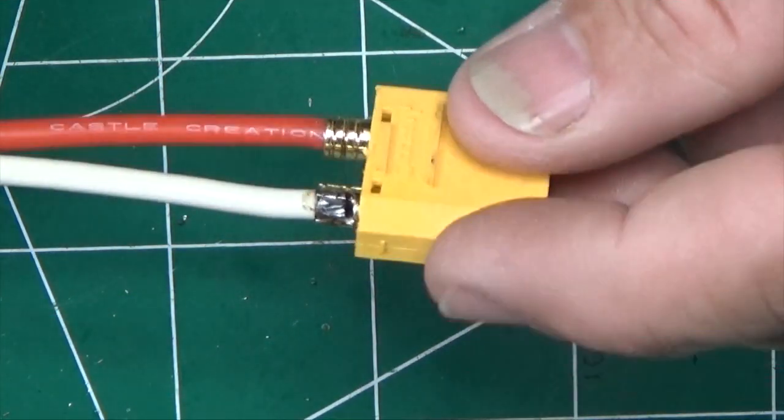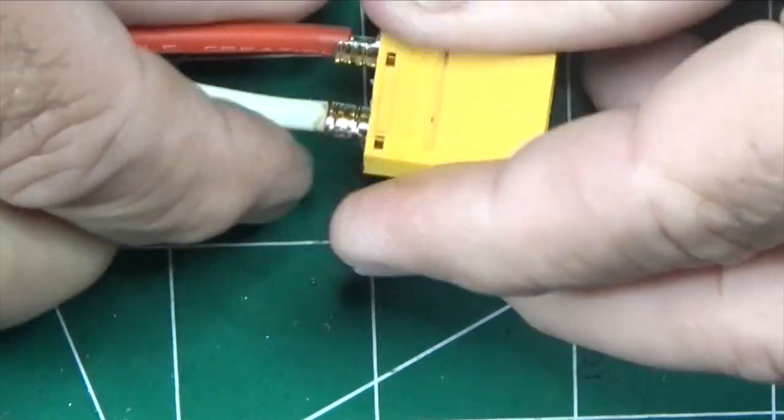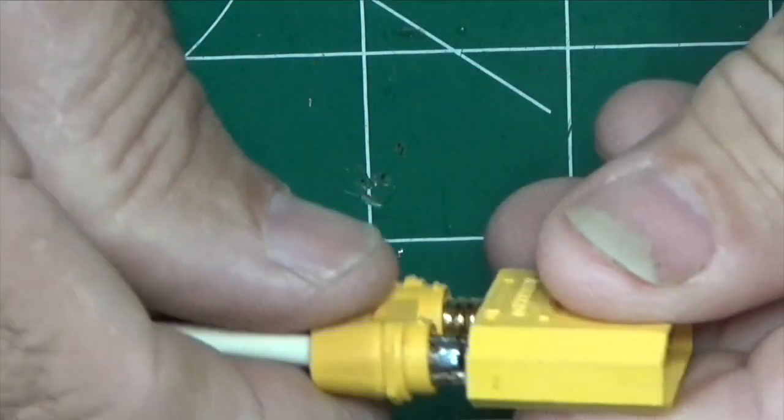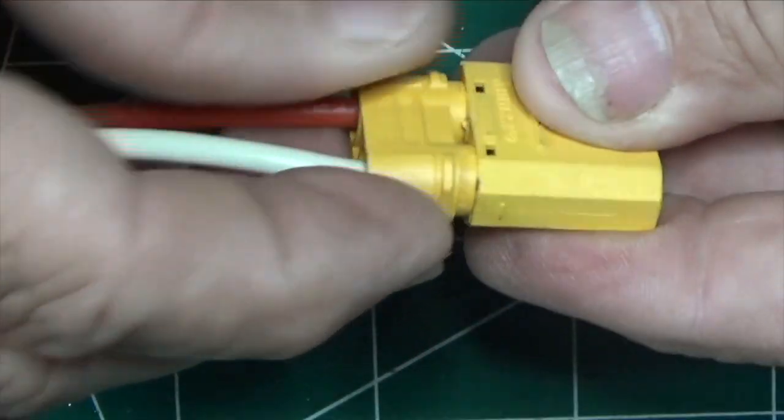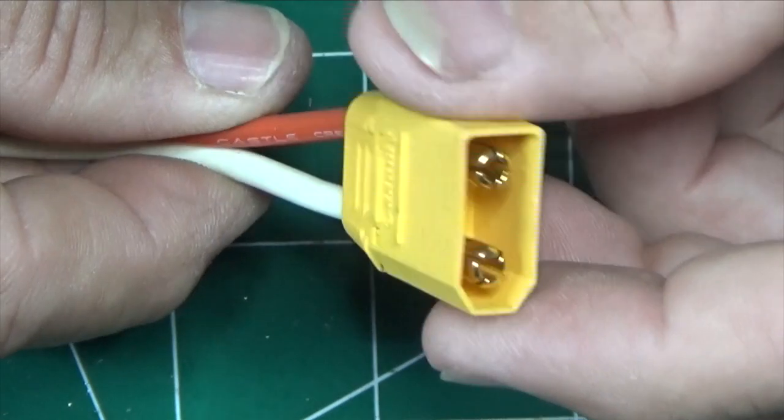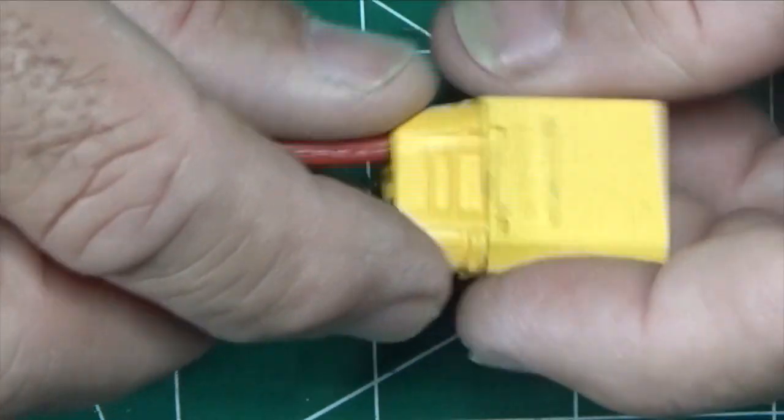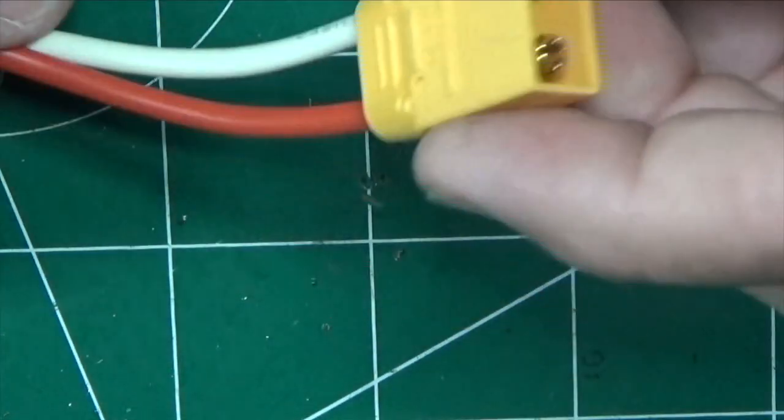Okay, we're all done with soldering our battery connection. We pull on it and make sure it's in there good. And then we slide on our insulator cap. And that's all done. So this is actually a male, the same as the female as far as the soldering procedure goes. And you're all done.